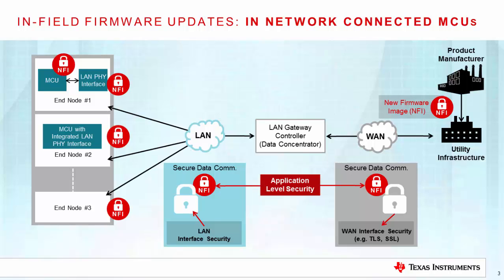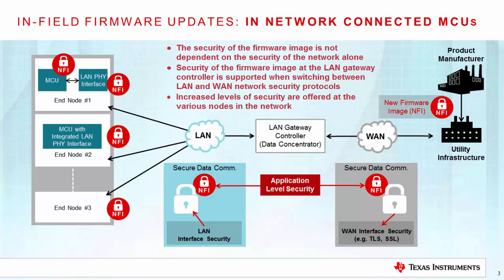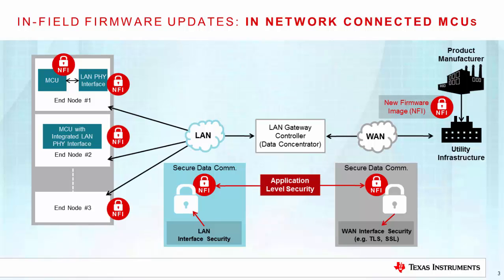In other words, the new firmware image that needs to be transferred from the product manufacturer to the MCUs and end nodes over the network is secured at an application level, even before the data enters the network, and the application-level security is enabled. Application-level security offers many advantages. One, the security of the firmware image in the network is not dependent on the security of the network alone. Two, it supports security of the firmware image at the LAN gateway controller when switching between LAN and WAN network security protocols. Three, it offers an increased level of security at the various nodes in the network. For example, if an attacker has access to the end node, then this application-level security ensures that the firmware image information is not readily accessible until the MCU application layer retrieves it.